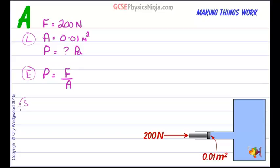Now we can solve the equation by putting the numbers in. So we go pressure is equal to 200 divided by 0.01. I'm not putting the units in here because the units in our data list are all SI units and they all agree. I don't need to do any conversions.